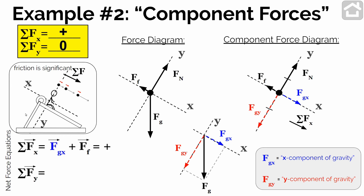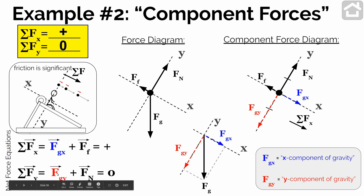When we look at our net force equations, this is just writing out the forces or components of forces which we're adding together in each direction. In the x direction: the positive x component of gravity plus the negative frictional force must add up to a positive value, because it's speeding up in the positive x direction. In the y direction: the negative y component of gravity plus the positive normal force must equal zero, which is how we know those two things are the same size.